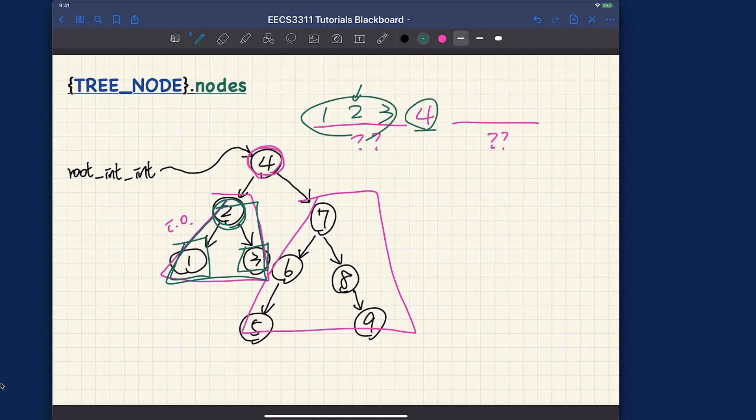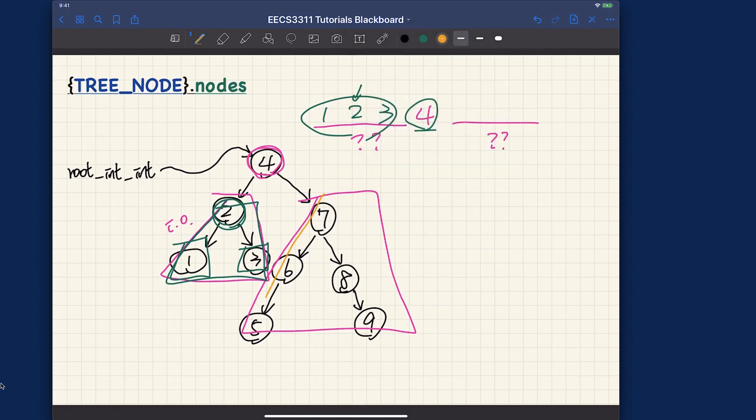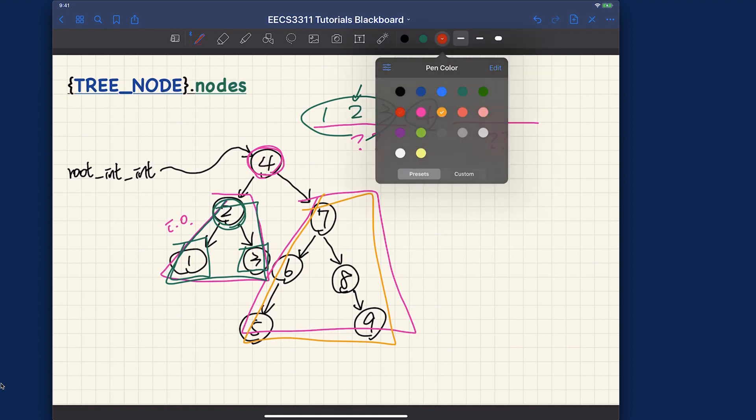So now we can simply put 4, and now we can do a recursive walkthrough for the right subtree for 4. Let me use a better color. Let's use red over here.